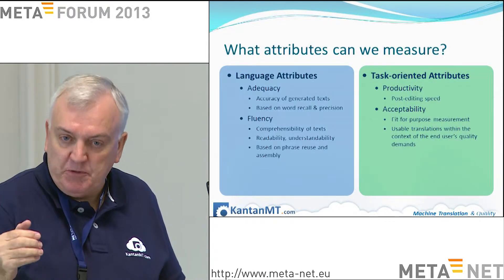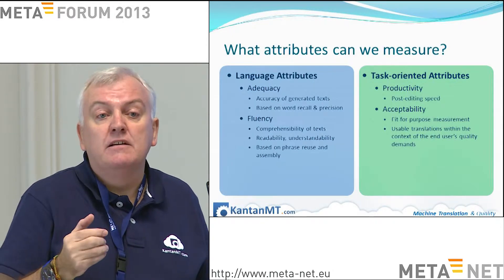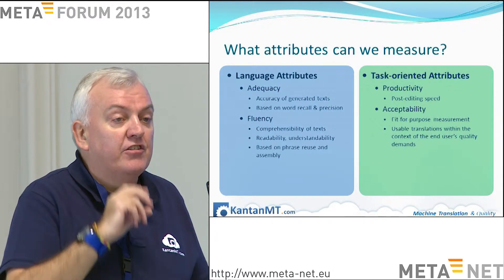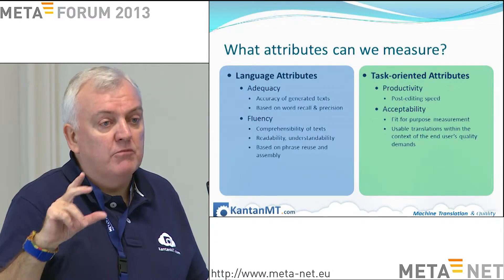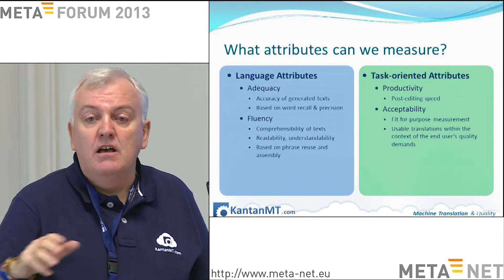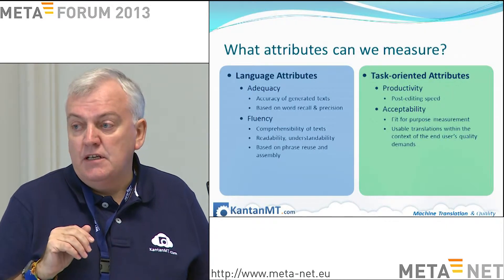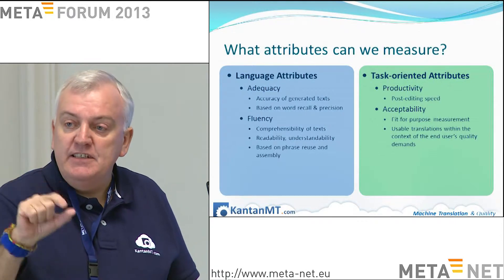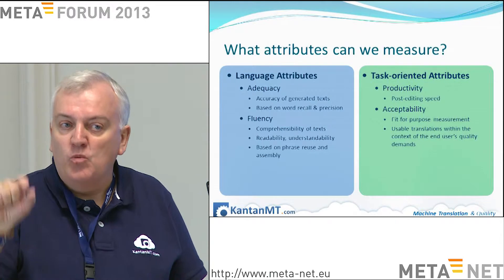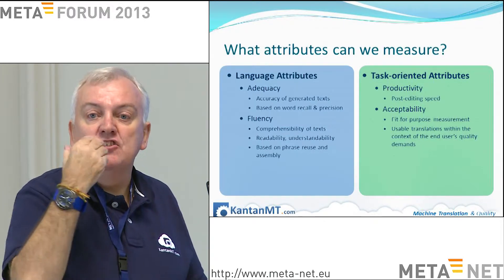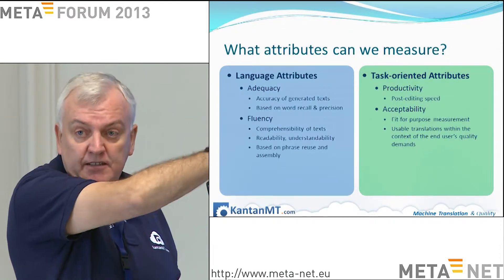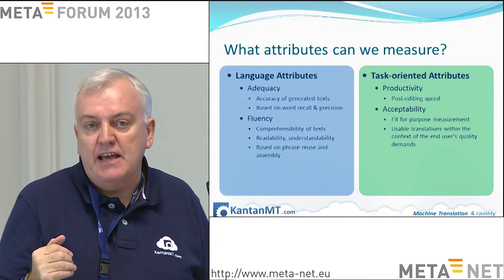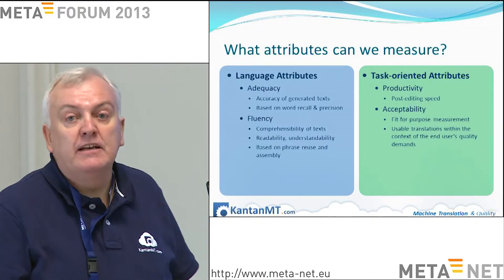The quality target is set by your customer — it always will be and always has been — but they will set the quality that is acceptable to them. For big data, that quality might be gist. They might only need a gist of what's in those tweets or messages. For example, a very large law firm came to us and said they wanted translation of 50,000 documents from German into English. We asked what quality they needed. They said they only needed to understand roughly what was in the documents, and then identify which ones to translate to a higher level. So the quality target could be gist, or it could be perfection. We want to give you a tool that measures the gap between your machine translation effort and the quality expected by your customer.